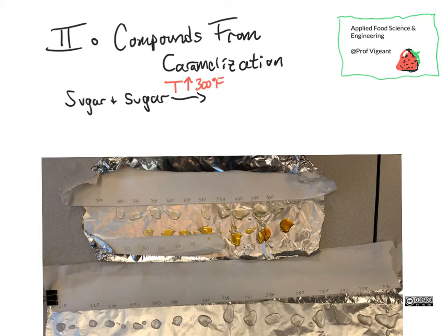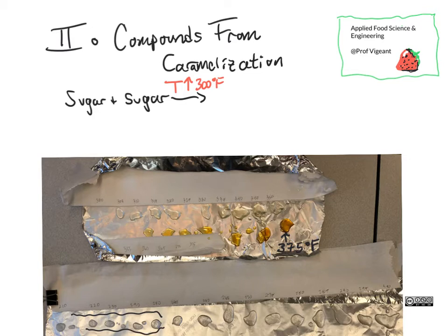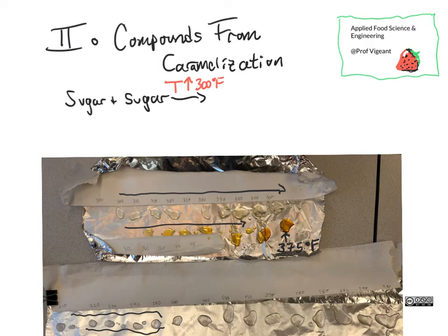So actual, true, honest-to-goodness caramelization is a sugar plus another sugar reacting, and this family of reactions also happens above 300 degrees Fahrenheit. You can see on the color scale: around 375°F you get a darker brown, whereas just above boiling it looks like a puddle of sugar water. Going through the 300s, it gets slightly browner — a little golden around 350°F — and then over 350°F it starts getting darker brown very rapidly. So caramelization occurs in the same temperature range as the Maillard reaction.